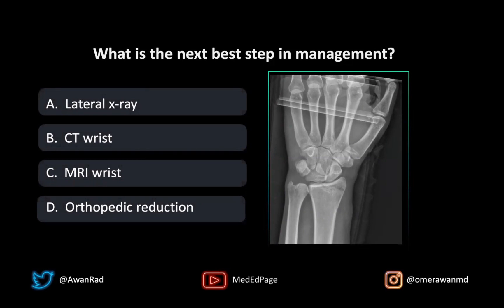Is it getting a lateral x-ray, a CT of the wrist, an MRI of the wrist, or an orthopedic reduction? What would be the next best step in management?